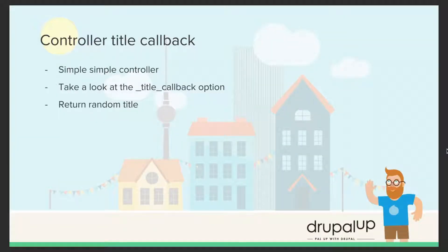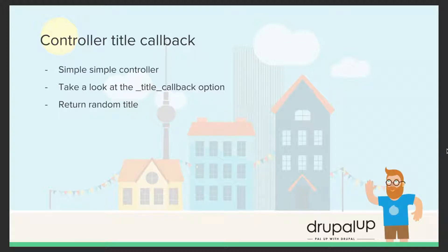In this video we're going to be taking a look at controller title callback. We're going to create a simple controller, take a look at the title callback option in the routing YAML, and we're going to return a random title for our controller page.